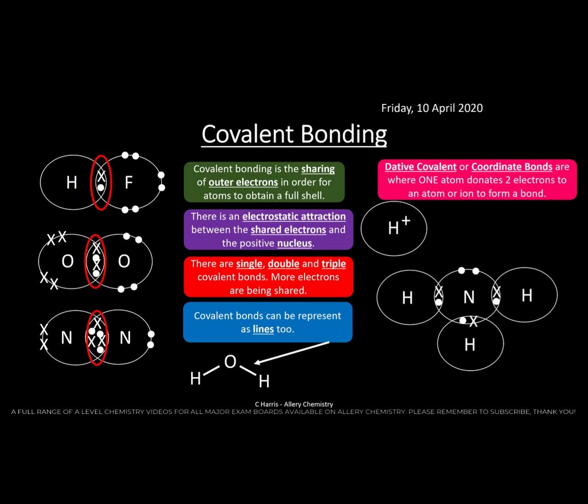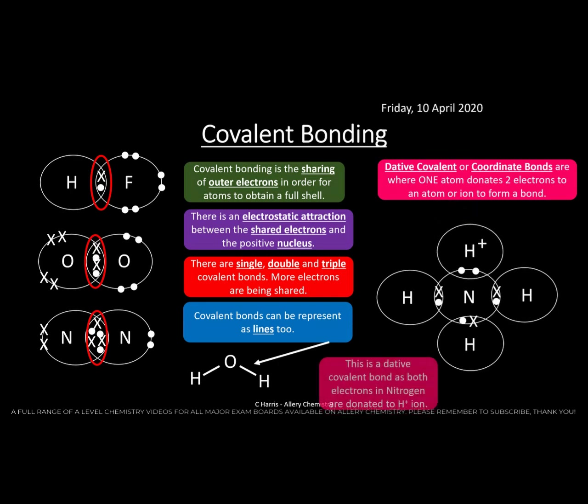There is another type called a dative covalent or coordinate bond, where one atom donates both electrons to form a bond. In this case, ammonia (NH₃) has a lone pair of electrons, and atoms with lone pairs are generally quite reactive. When NH₃ reacts with an H⁺ ion (from an acid), the lone pair on nitrogen is donated to the H⁺, which has no electrons, forming a dative covalent bond.